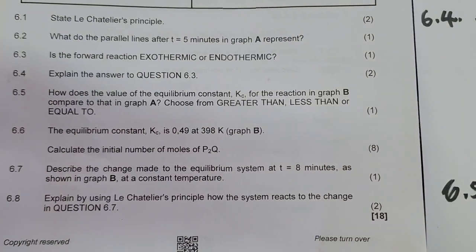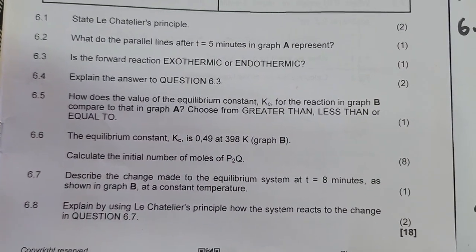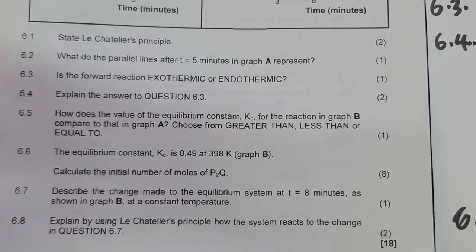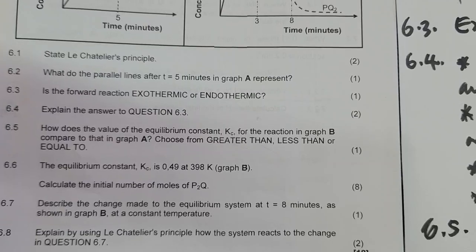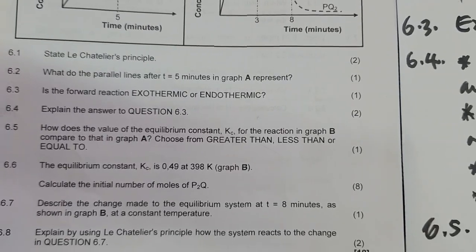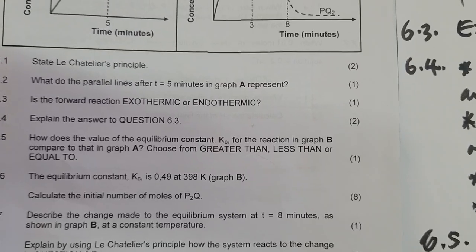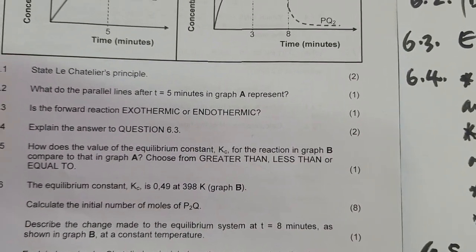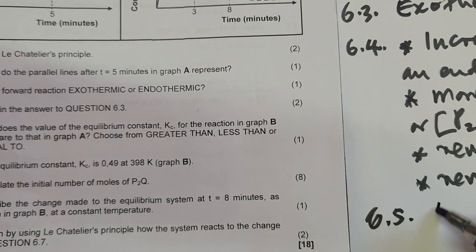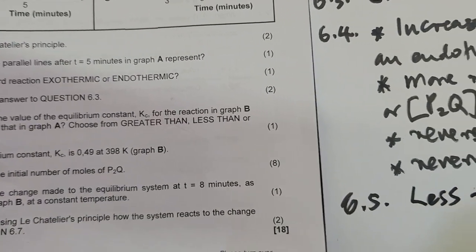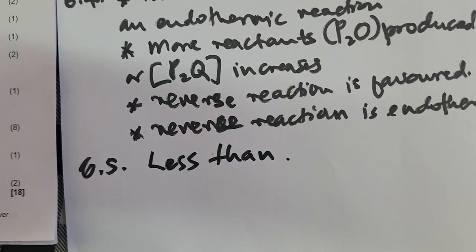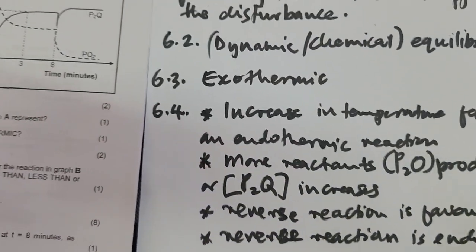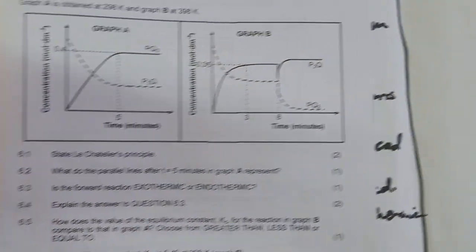6.5: How does the value of the equilibrium constant Kc for the reaction in graph B compare to that in graph A — choose increase, decrease, or remain the same? We know that when you increase the temperature and favor the reverse reaction, Kc will decrease. So the answer is Kc decreases.